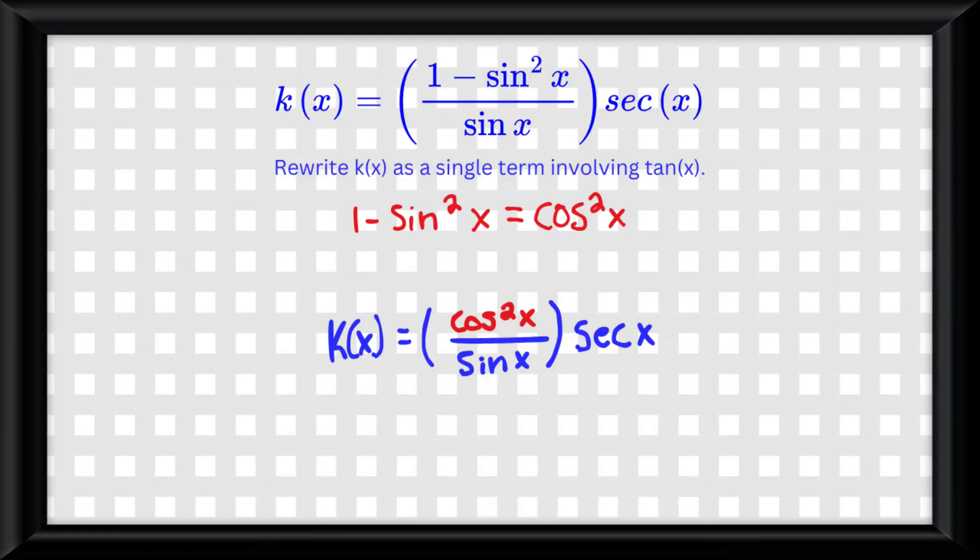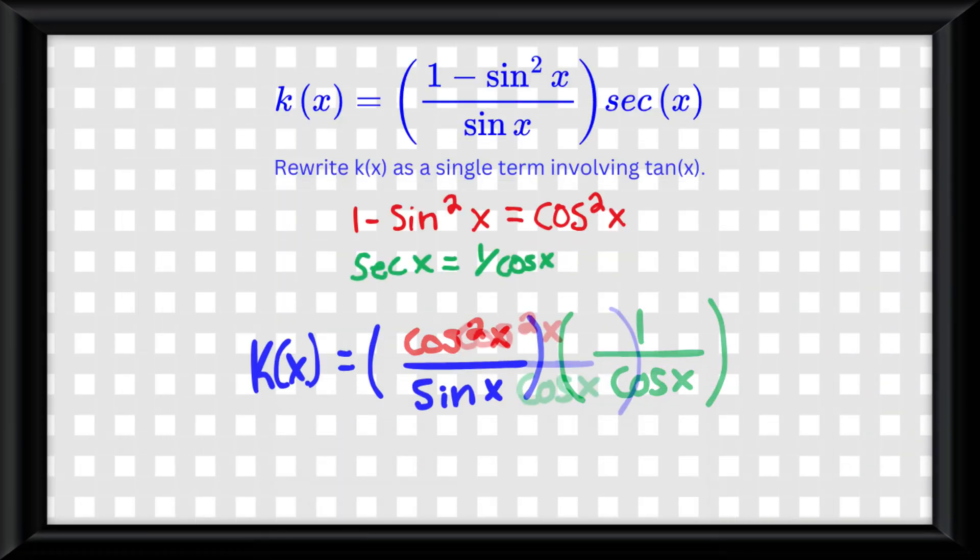From the reciprocal identities, we know secant is equal to 1 over cosine. Now we can multiply the two fractions together. We are able to cross out the cosine on the bottom and the square root on the top, and that leaves us with cosine of x over sine of x, which is equal to cotangent of x.